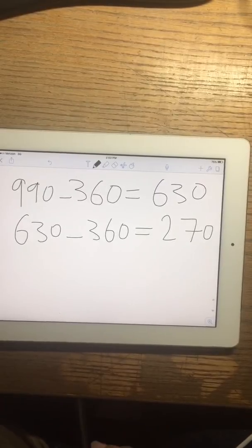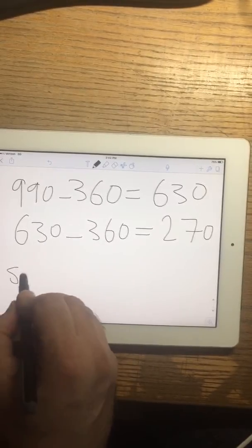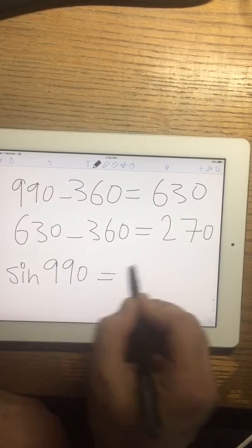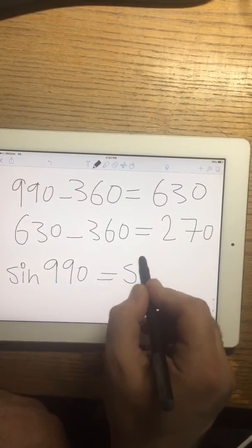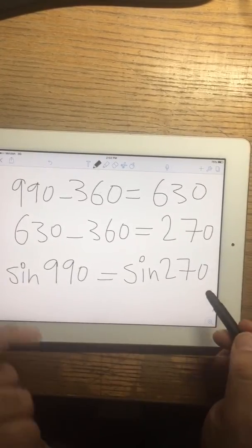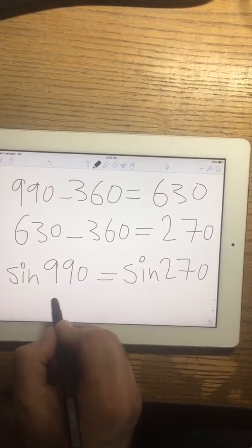So the sine of 990 is the same as sine 270. That's why they have the same value and both are negative 1.